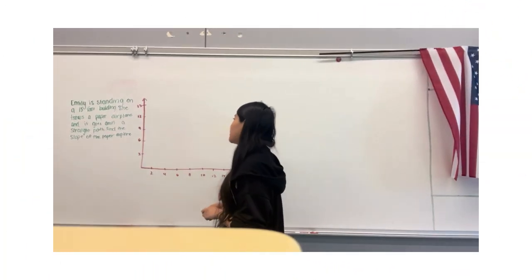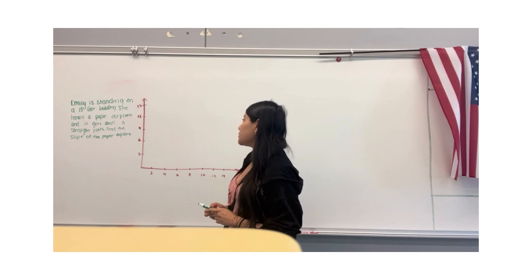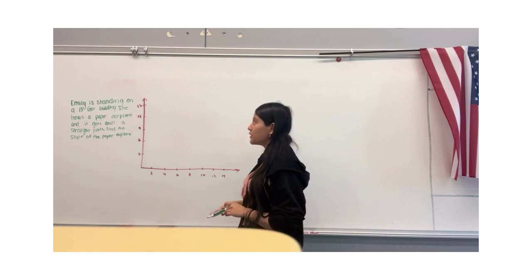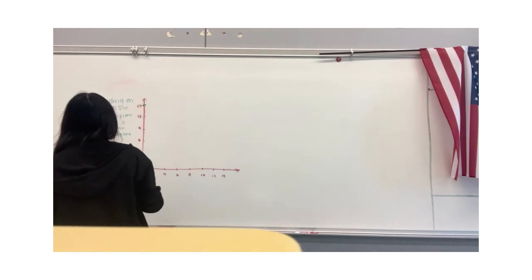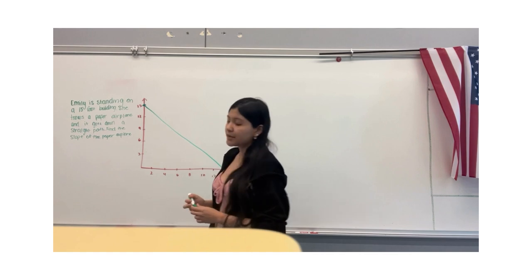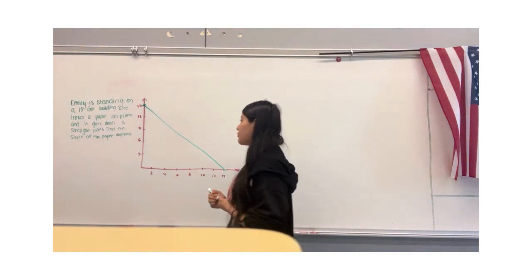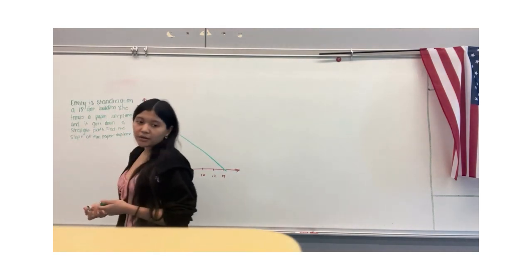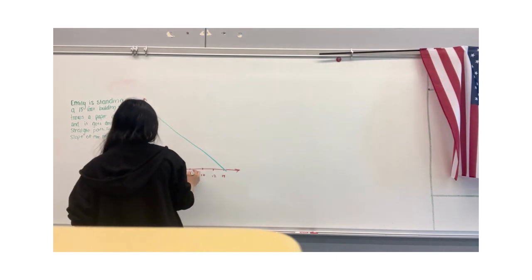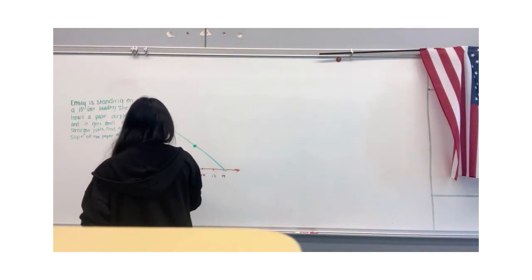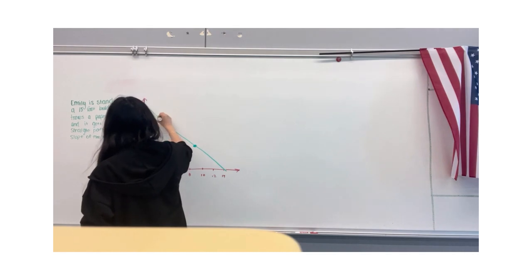So first I'm going to read the hypothetical. Emily is standing on a 15-foot building. She throws a paper airplane and it goes down a straight path by the slope of the airplane. So first I'm going to graph it. I'm going to start at 15 because that's the height of the building, and I'm going to go down to 14 because it goes down in a straight line. Next I'm going to plot three points: 15-zero, 9-6, and 3-12.